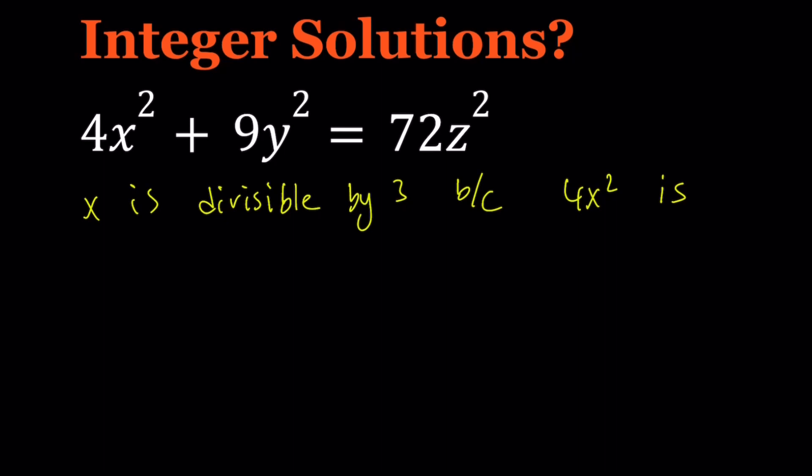We also know that 4x squared and 72z squared are even, therefore 9y squared needs to be even, which means y is even — because 9y squared is.